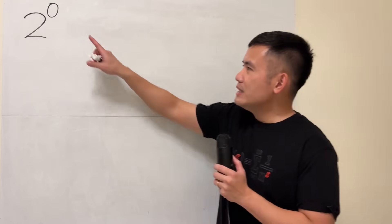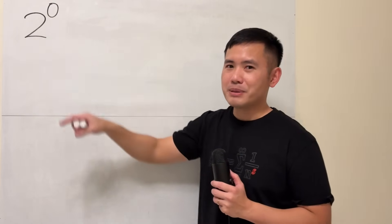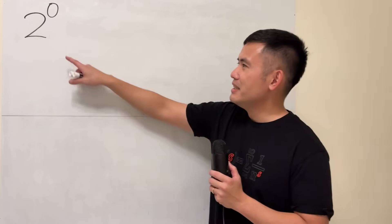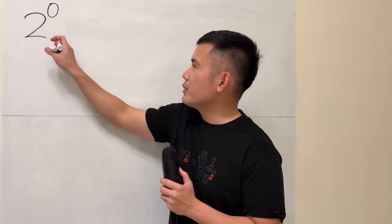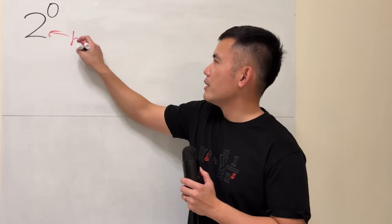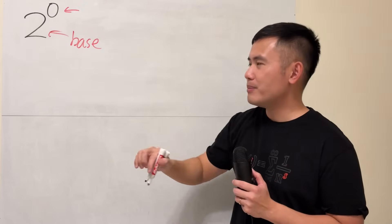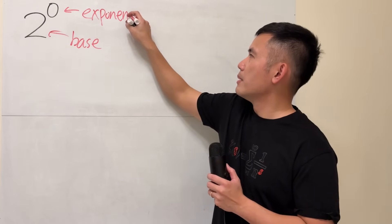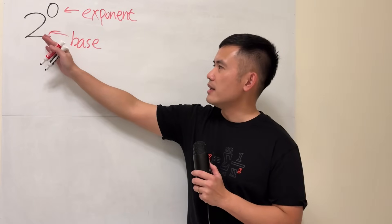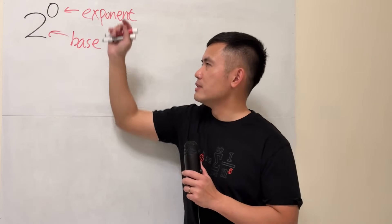However, once we place the 0 right here and smaller, this becomes a math question. This is an exponent question. As a quick review, the big number 2 right here is called the base, and then the top right corner here, the small number, is called an exponent, or also called as a power. You can say this as 2 to the power of 0, or 2 to the exponent 0.